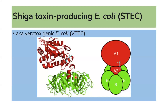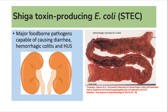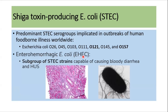Shiga toxin-producing E. coli is also known as verotoxigenic E. coli. It is a major foodborne pathogen capable of causing diarrhea, hemorrhagic colitis, and hemolytic uremic syndrome. This picture shows the hemorrhagic necrosis of the colon following E. coli infection.